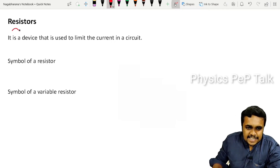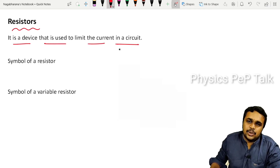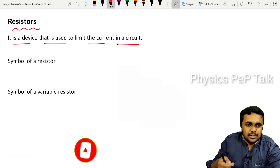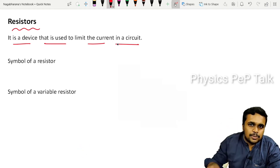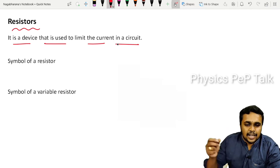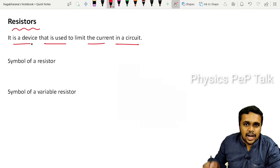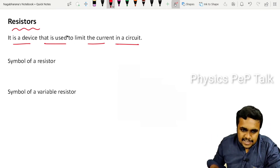First, what is a resistor? It is a device that is used to limit the current in a circuit. For example, when you charge a mobile phone, you connect it to the main source. A suitable adapter is used, which limits the current going to the mobile. That adapter is limiting the current — that is what is called a resistor.